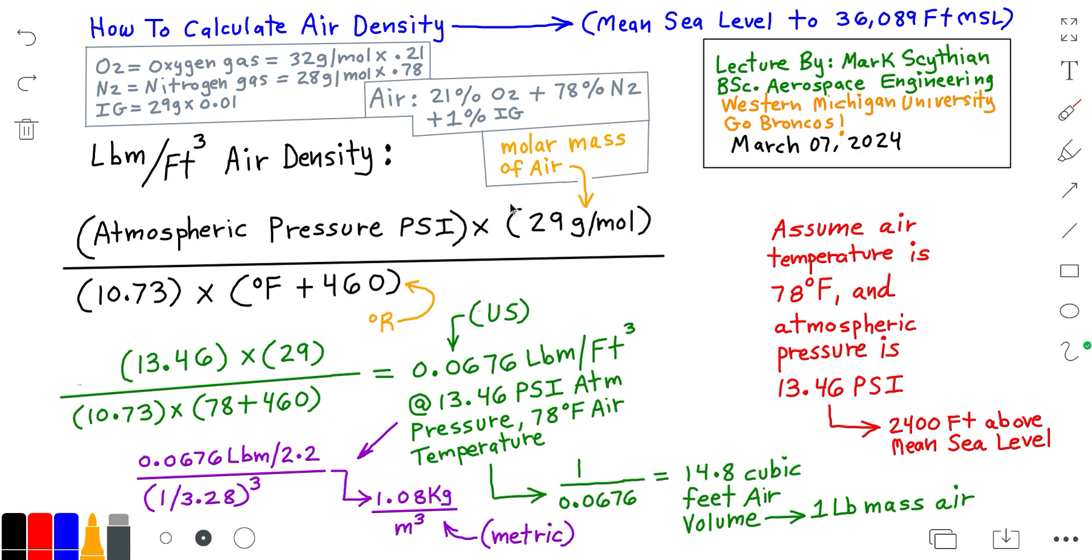This molar mass of air is multiplied times the atmospheric pressure in psi, then divided into the ideal gas law constant for air, which is 10.73, then multiplied times the Rankine absolute air temperature, which is the relative temperature in Fahrenheit plus 460.